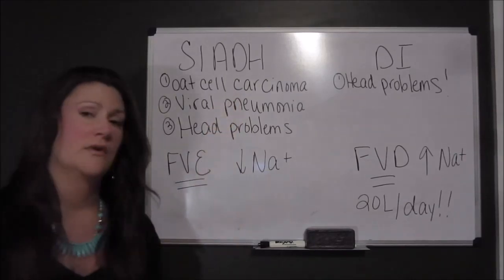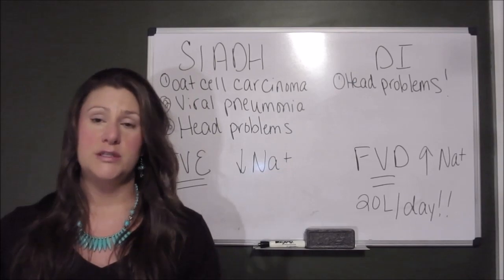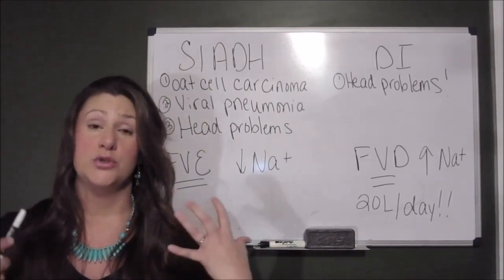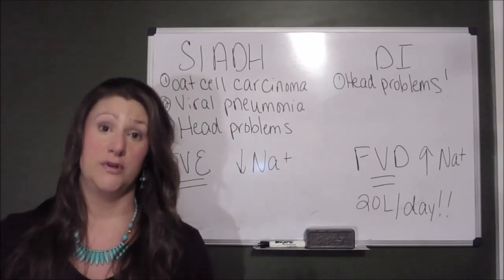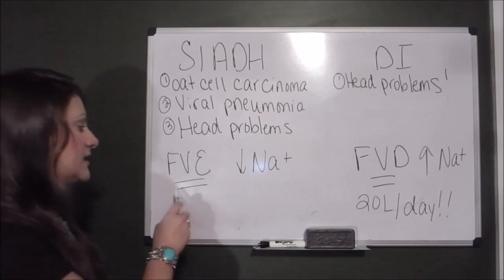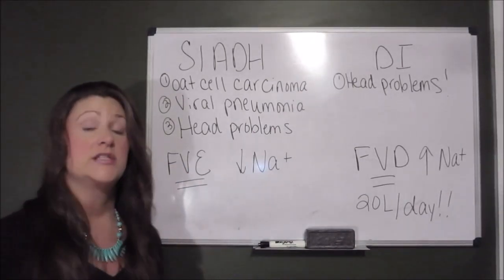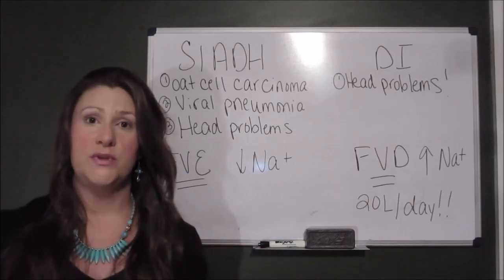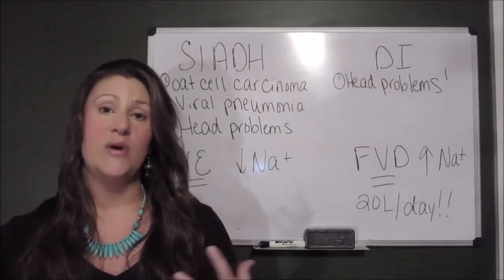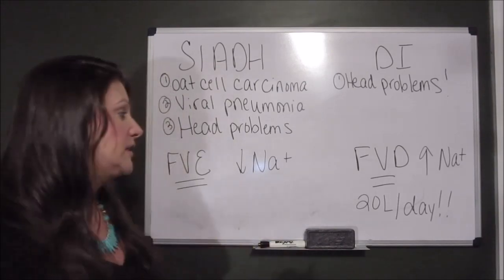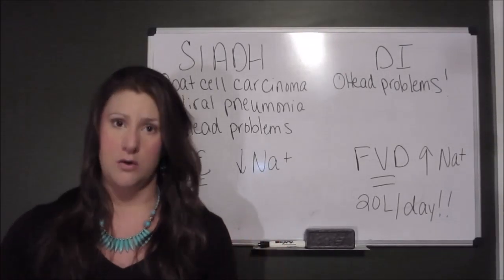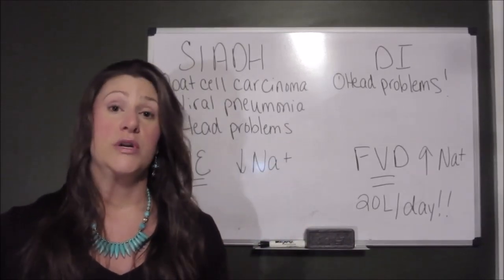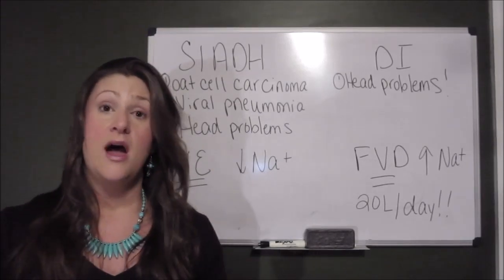Oat Cell Carcinoma causes the posterior pituitary to start overproducing anti-diuretic hormone. It signals directly to the kidneys and keeps the kidneys from producing fluid, resulting in signs and symptoms of fluid volume excess — too much fluid on board. Hemodilution occurs, and serum sodium will appear very low. You will also see edema and the patient will be hypertensive.